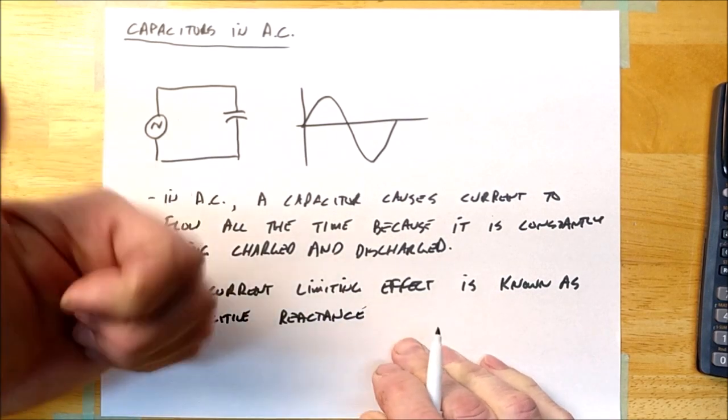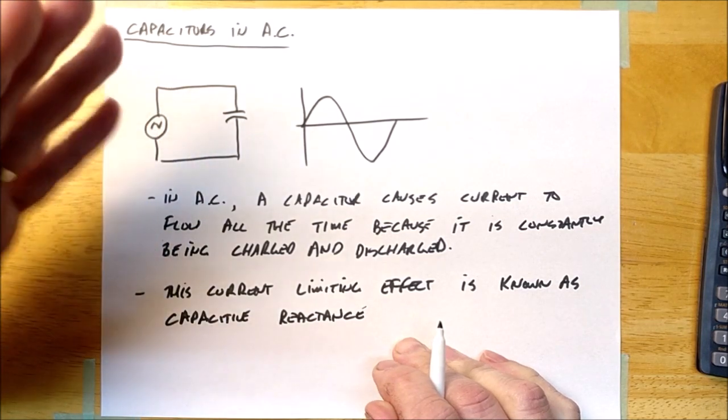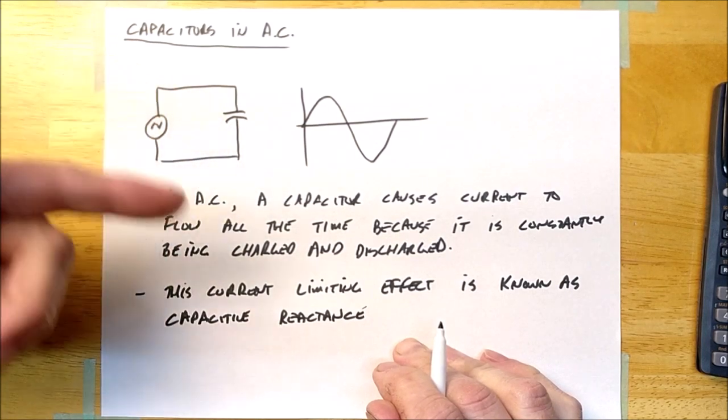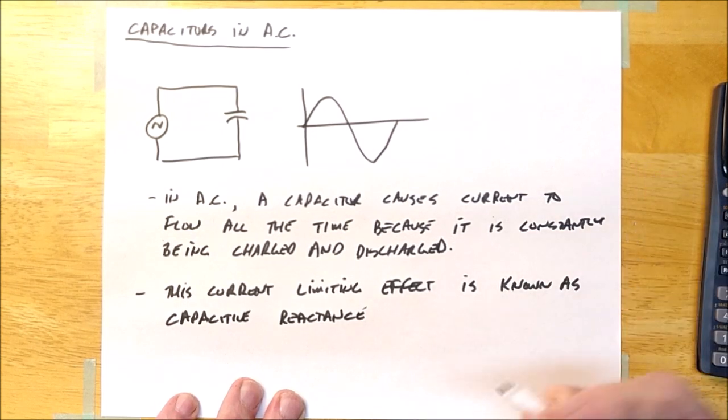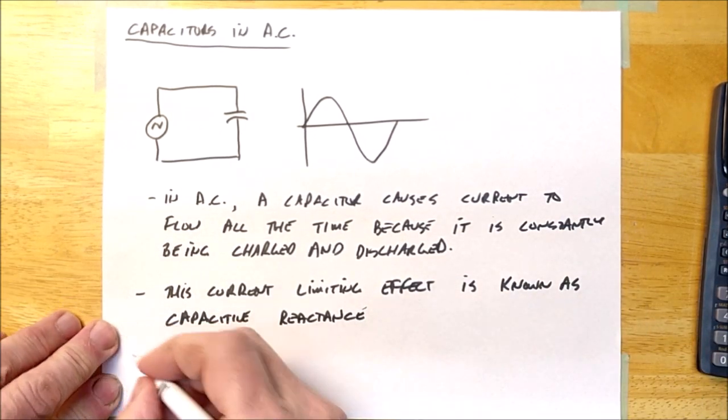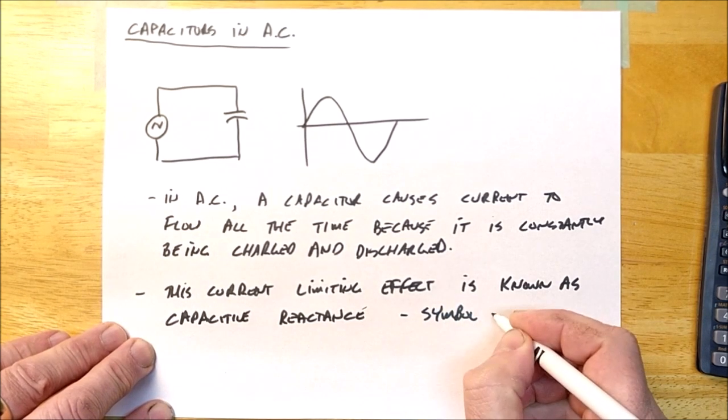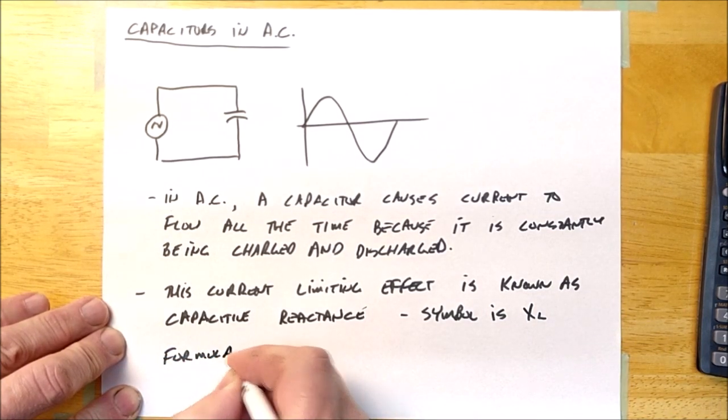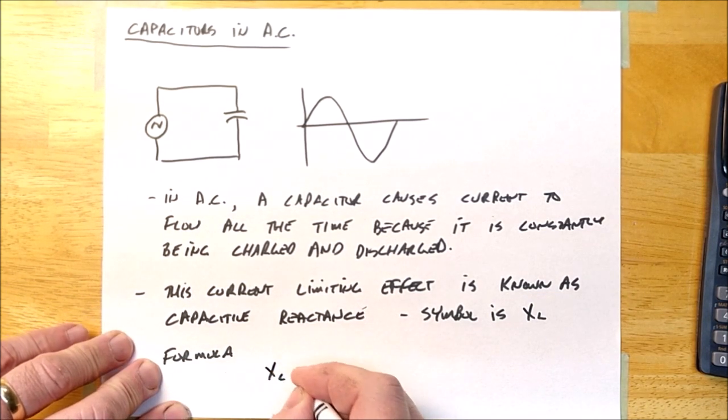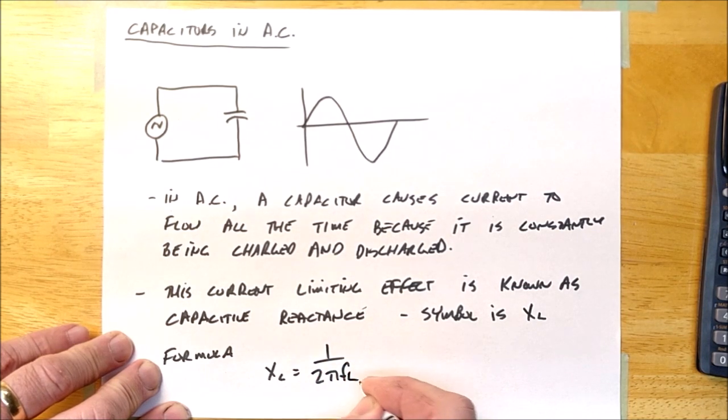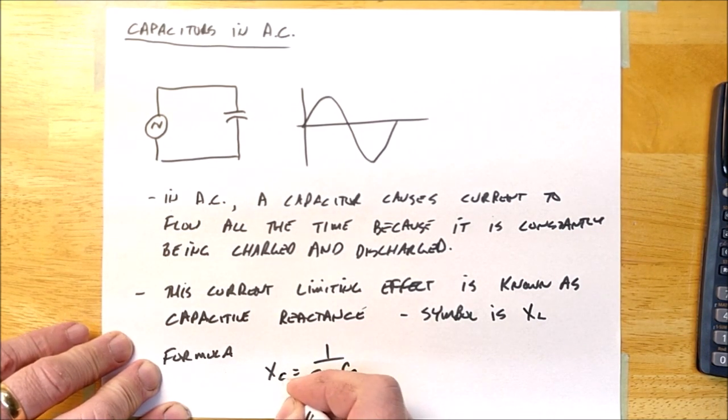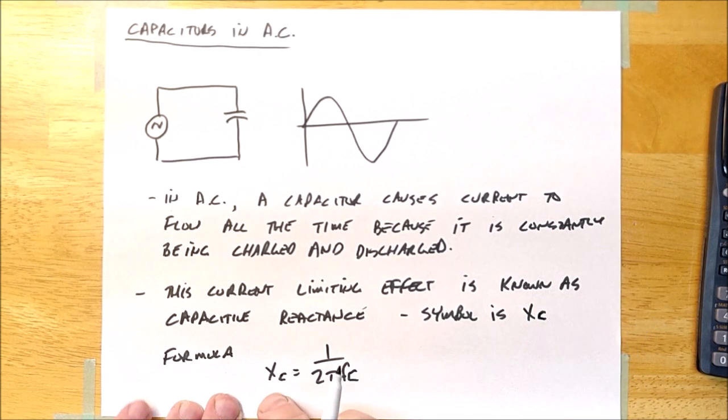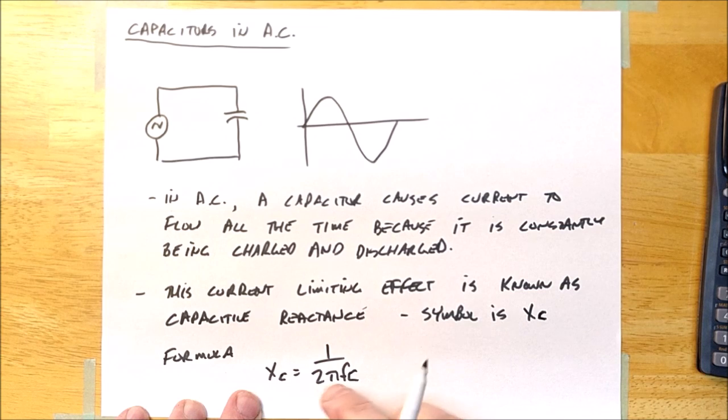And so now we've got resistance that limits current in an AC circuit. We've got inductors, XL, that limit current in a circuit. Now we've got capacitors that if I put them in an AC circuit, they limit current. And so I've got resistance, inductive reactance, and now capacitive reactance. And so the symbol for capacitive reactance is XC, and the formula to calculate XC is XC is equal to 1 over 2 pi FC.